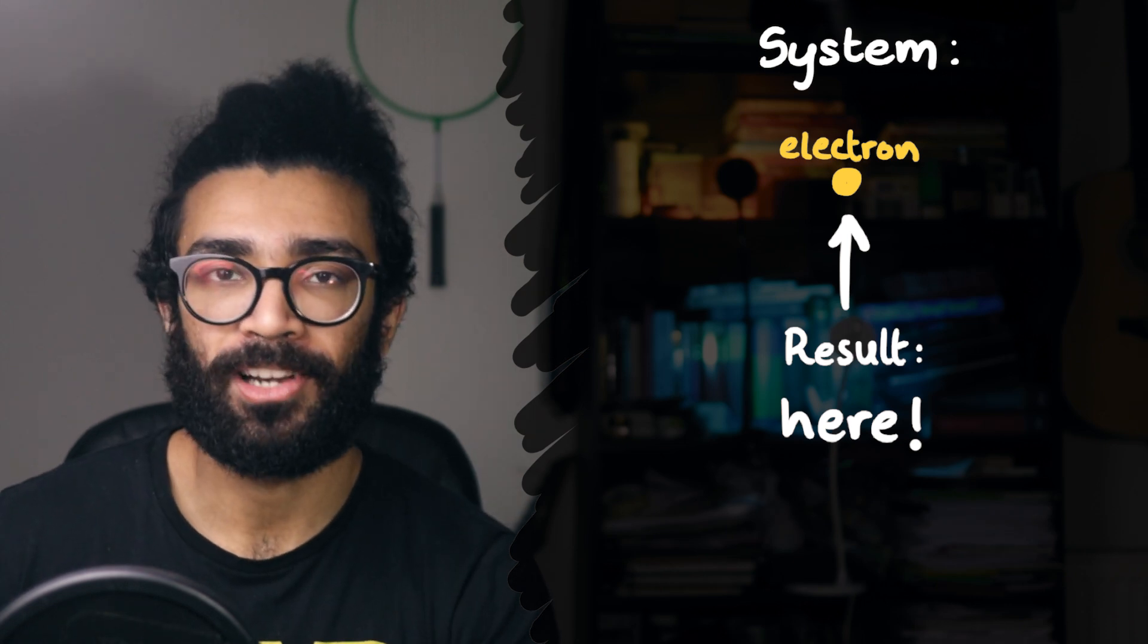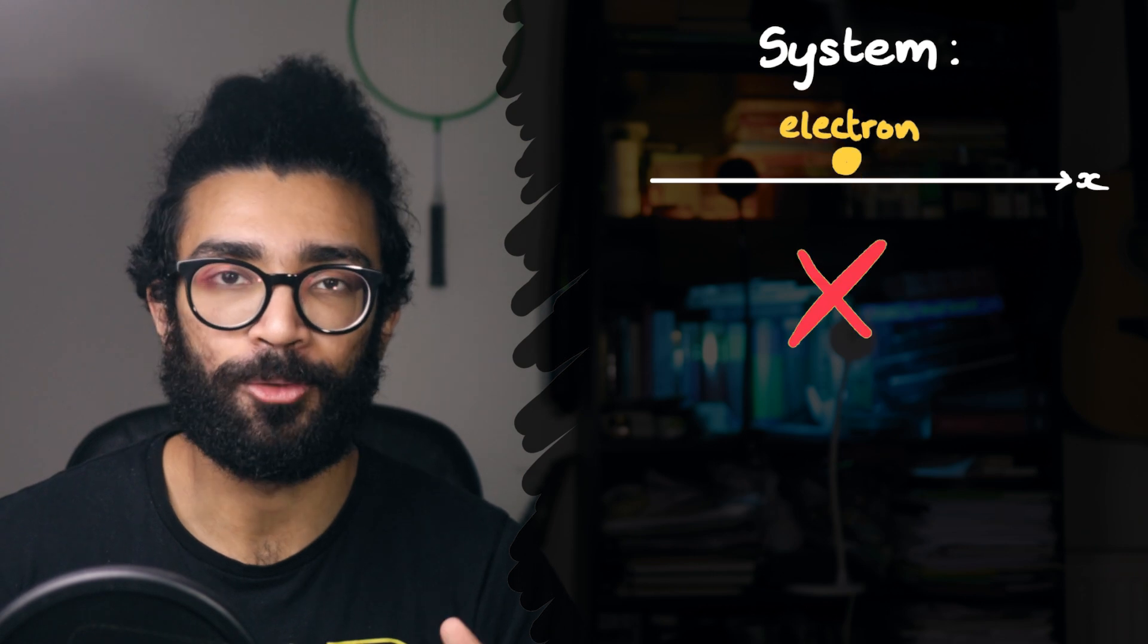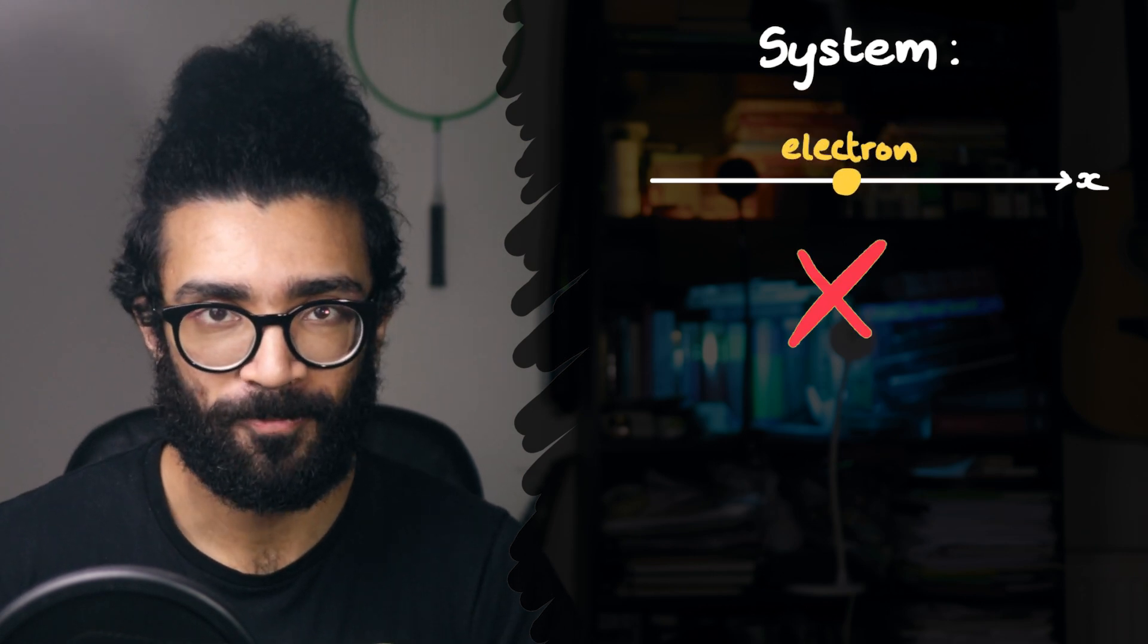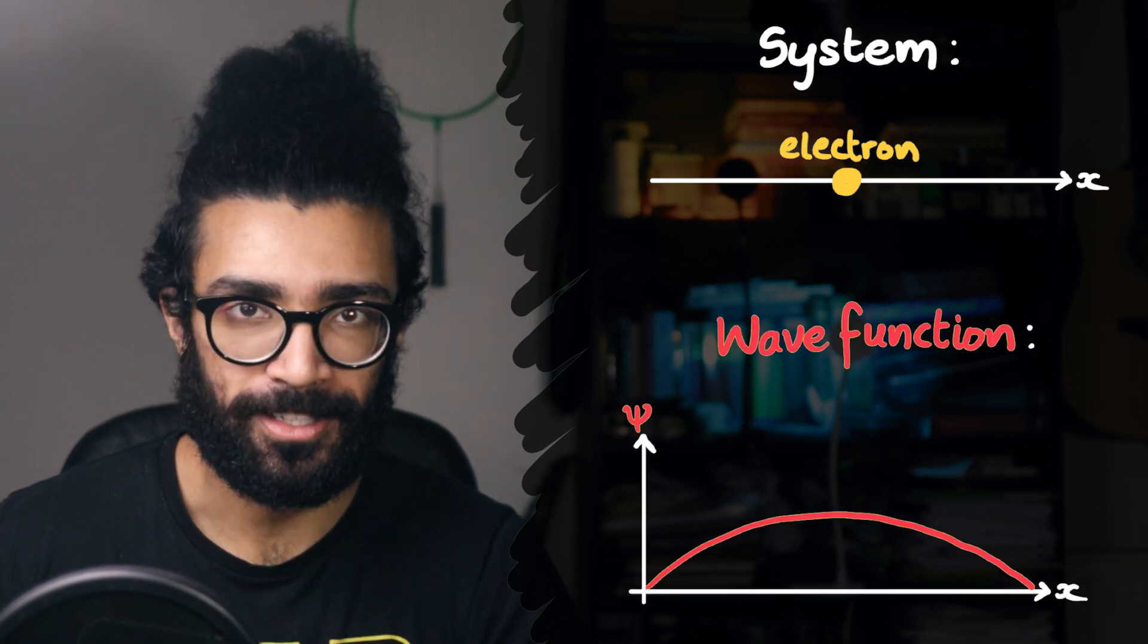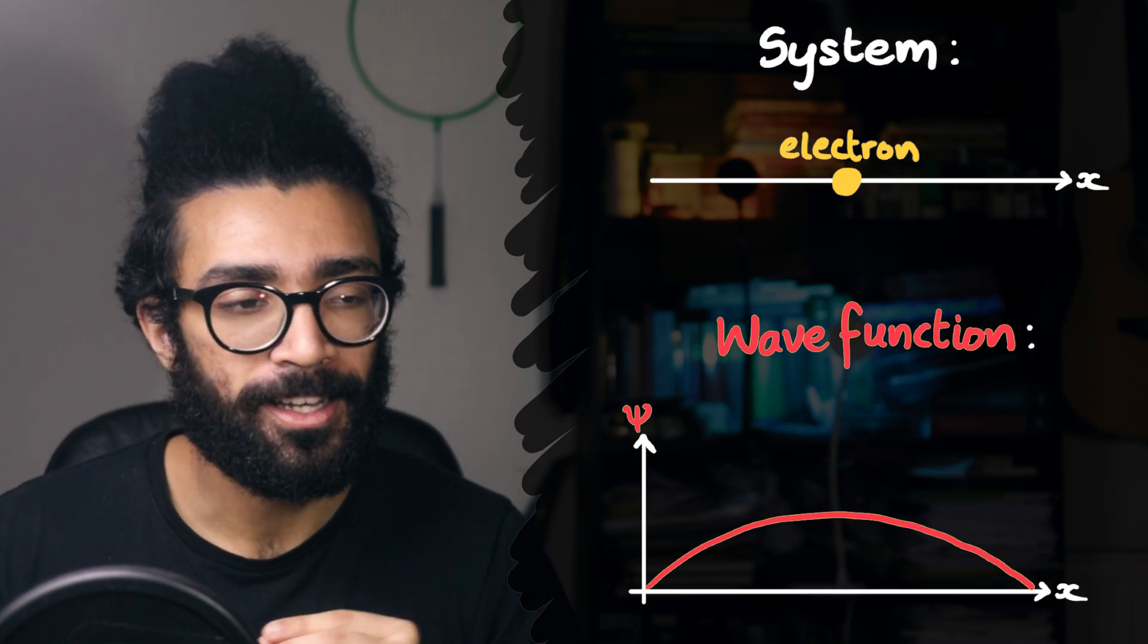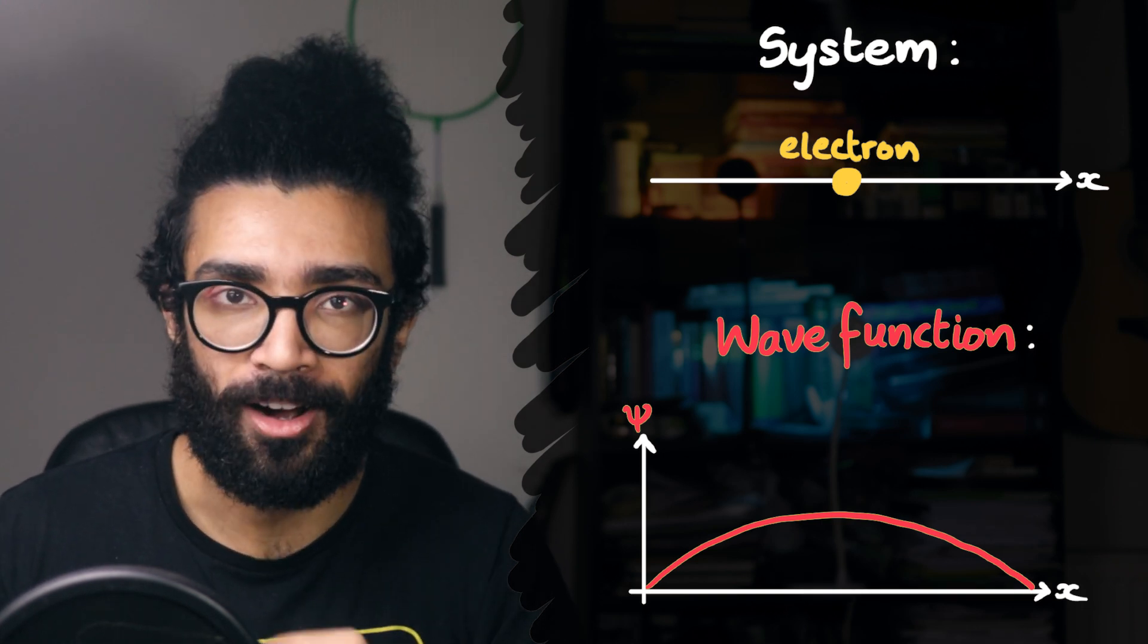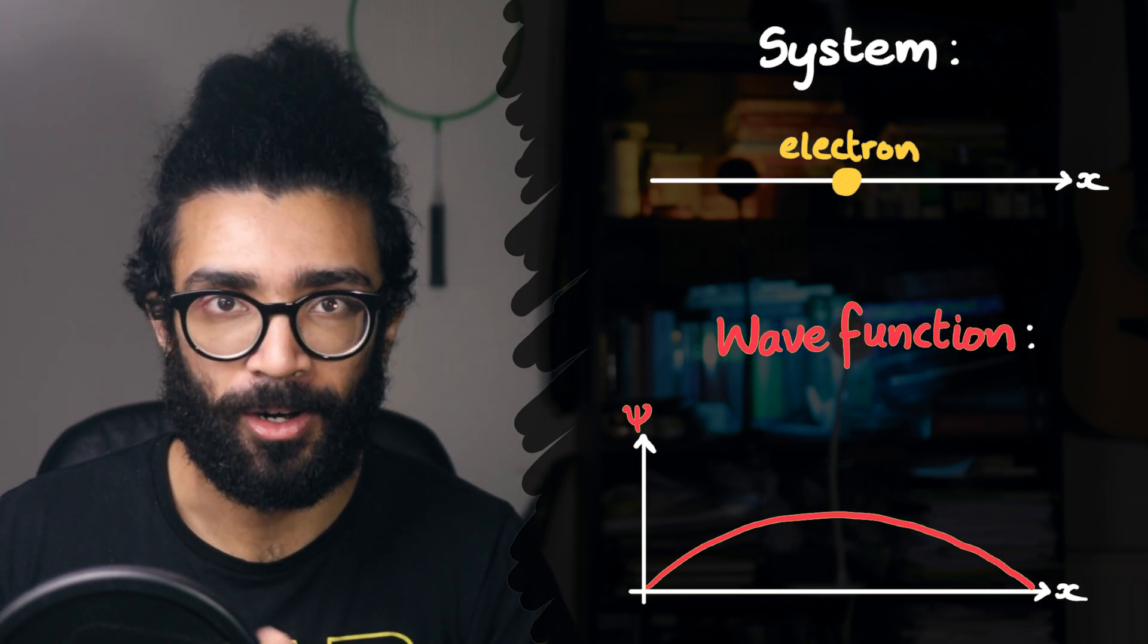Where the experiment that we conduct on this electron is to try and find its position, and the experimental results that we're talking about is essentially where we find the electron. To keep things simple, we will say that our electron can only move along this axis here, the x-axis. It cannot move up or down or in and out of the screen. And let's also say that our wave function for this electron looks something like this.